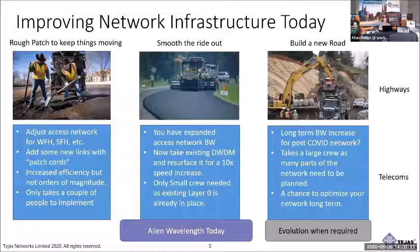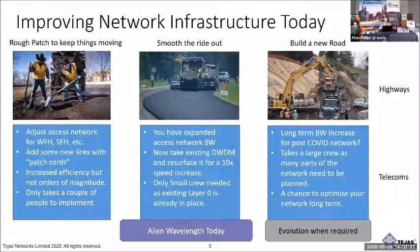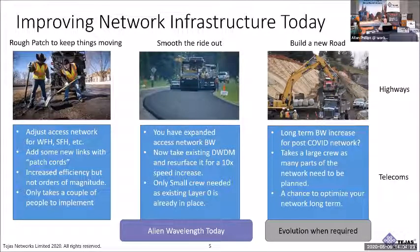I want to start off with a little analogy. As we're going through this bandwidth change, one of the things we think about is how do we scale this up? I'm going to use the analogy of improving the road infrastructure to represent improving the network infrastructure. One thing you can do with a rough road is just patch things to keep things moving — add another 10 gig link here or there, get your transport going. But really that's patchwork; it doesn't smooth things out for any significant amount of time.